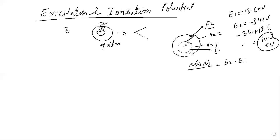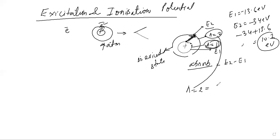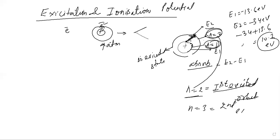The energy at E1 is minus 13.6 eV, and E2 is minus 3.4 eV. So the energy absorbed is minus 3.4 plus 13.6, which equals 10.2 electron volts. After absorbing this energy, the electron moves from the inner orbit to the higher orbit. When it moves from n=1 (ground state) to n=2, the electron is said to be in the excited state. n=2 is called the first excited orbit; n=3 would be the second excited orbit.